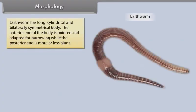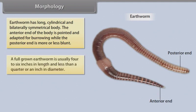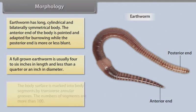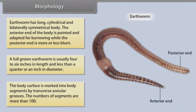Earthworm has a long, cylindrical, and bilaterally symmetrical body. The anterior end is pointed and adapted for burrowing, while the posterior end is more or less blunt. A full-grown earthworm is usually four to six inches in length and less than a quarter inch in diameter. The body surface is marked into segments by transverse annular grooves, with more than 100 segments.